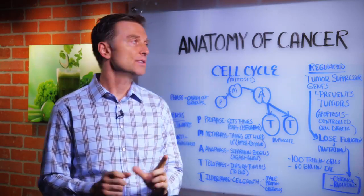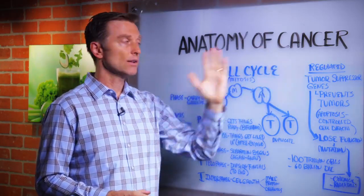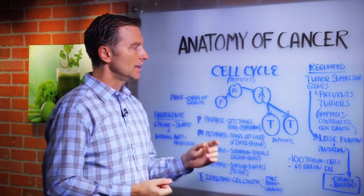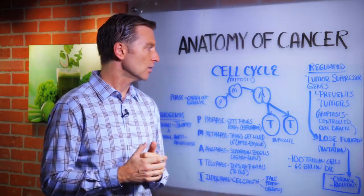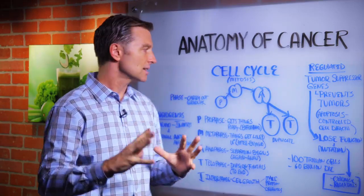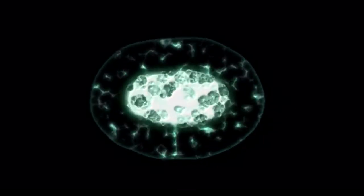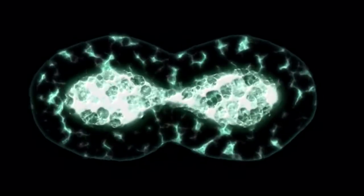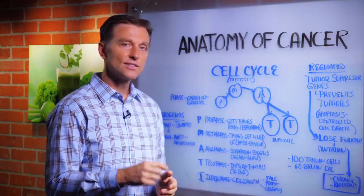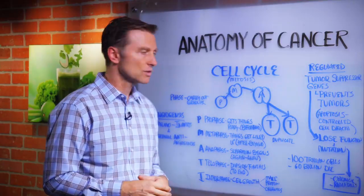In this video we're going to talk about the anatomy of cancer. Let's start at the beginning with the cell cycle. If you ever took biology in high school, you learned about mitosis. Mitosis is the cell division phase where the cell divides and duplicates. Your cells have little copy machines in there that can actually make a new cell — it's quite magical.